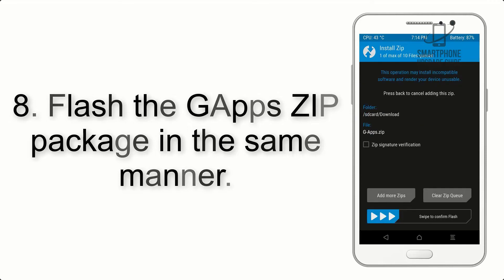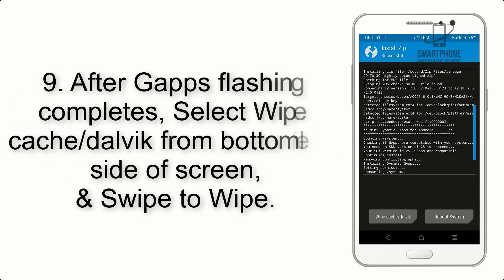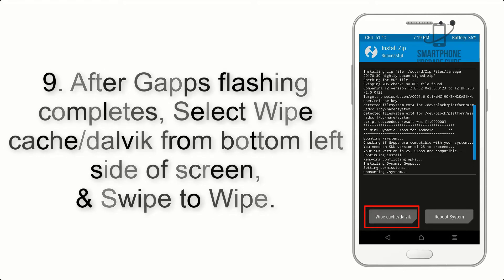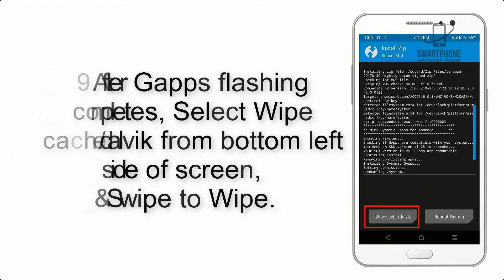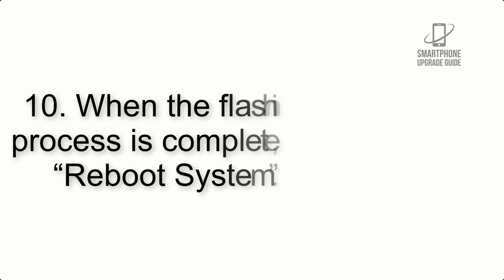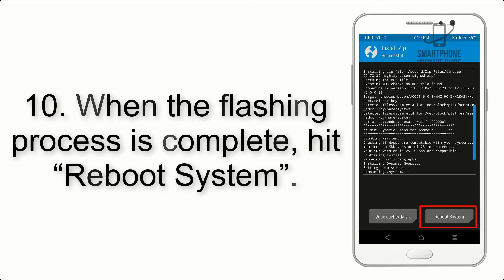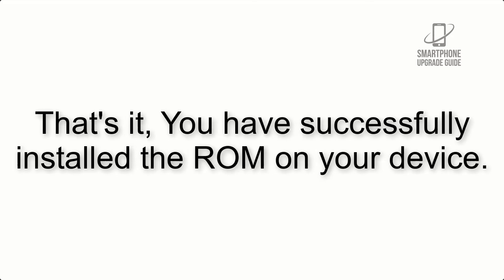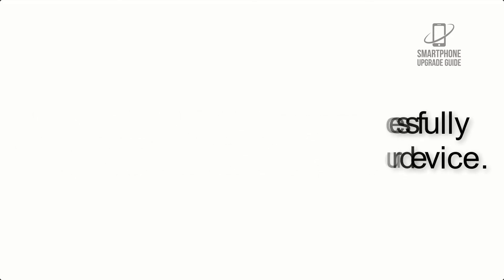Step 8: Flash the GApps zip package in the same manner. Step 9: After GApps flashing completes, select Wipe Cache and Dalvik from the bottom left side of the screen and swipe to wipe. Step 10: When the flashing process is complete, hit Reboot System. That's it — you have successfully installed the ROM on your device.